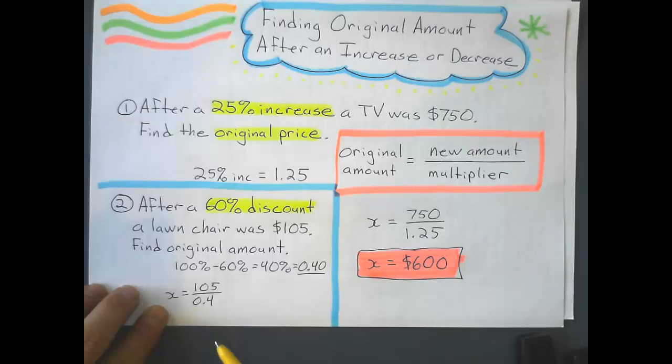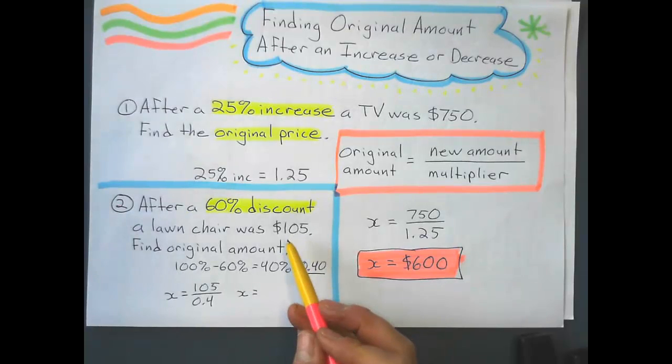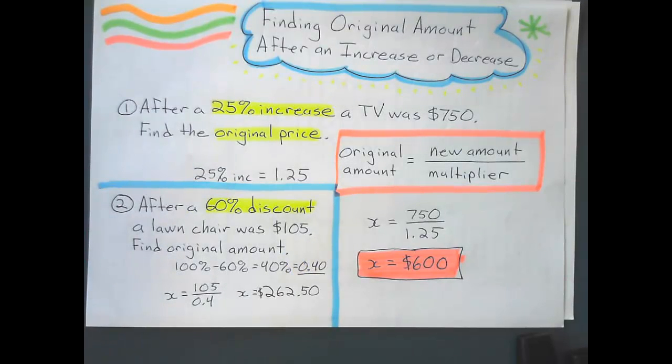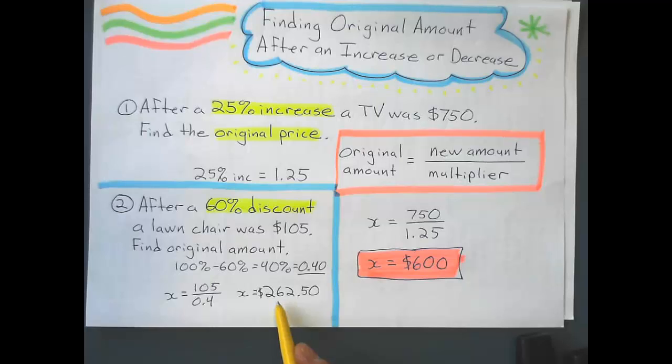Now we have to think, because this has been discounted, so the original amount better be more than $105. So it was. It was a lot more. $262.50. That's what it was before the 60% discount.